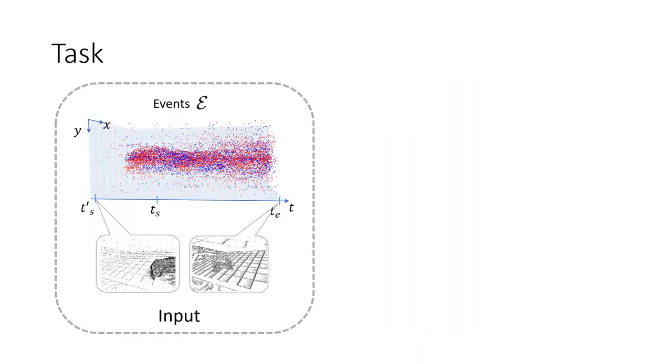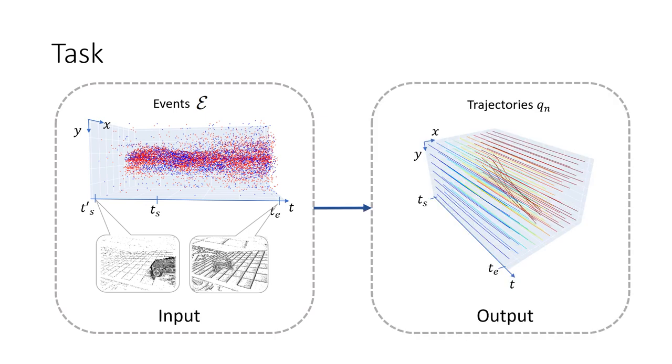We introduce a self-supervised method for dense nonlinear motion estimation. The input are the events within a time window of about half a second. The output are continuous time nonlinear trajectories for every pixel filling the spatial temporal volume.